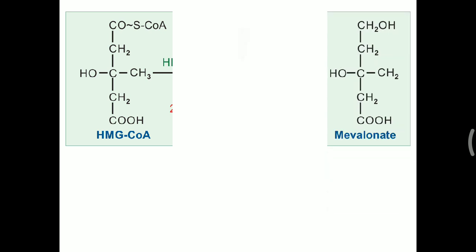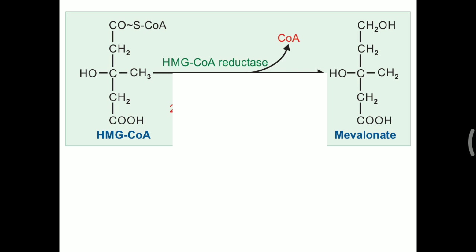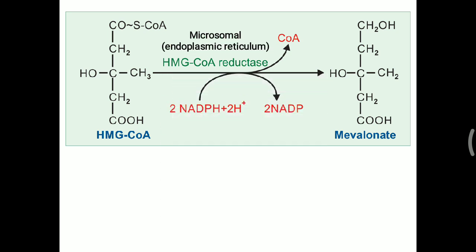HMG-CoA is converted into mevalonate with the help of HMG-CoA reductase enzyme. NADPH is required during this process. This conversion occurs inside the endoplasmic reticulum (microsomal fraction) and is the rate-limiting step of cholesterol formation — distinguishing it from ketone body formation. HMG-CoA reductase is frequently asked in MCQs.